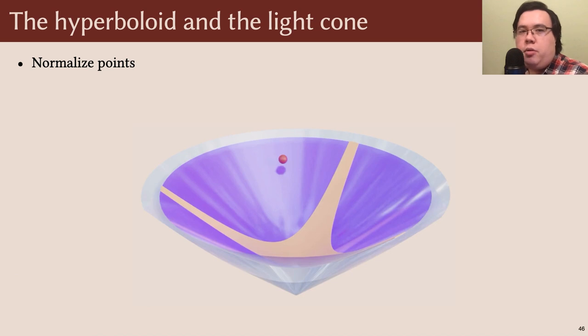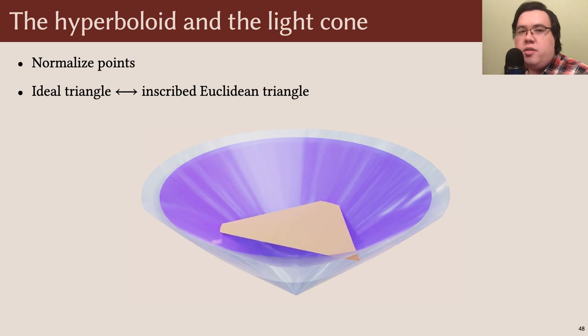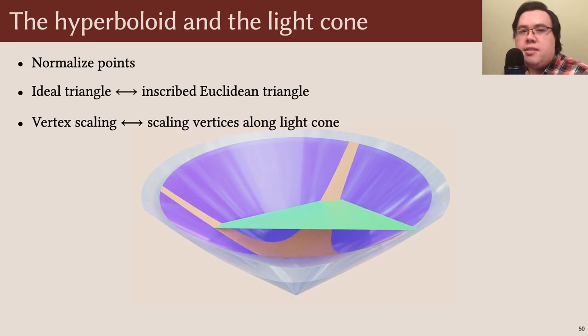One really useful thing about the hyperboloid model is that we can take any point within the light cone and normalize it so that it lies on the hyperboloid. Going the other direction, we can take all the points on some ideal triangle and scale them so they lie along a Euclidean triangle inscribed in the light cone. This correspondence between an ideal and Euclidean triangle is essentially the same correspondence that we introduced earlier via the Beltrami-Klein model.